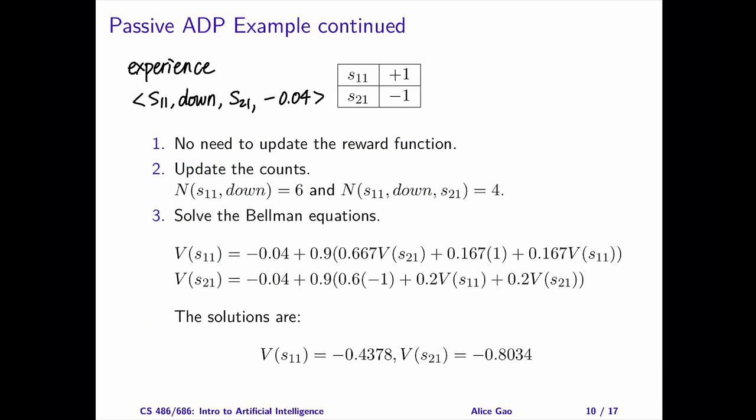Let's go through the loop once. The current state is S11. The policy says that the agent should go down. Suppose that the agent reached S21 and received the reward of minus 0.04. The experience is: